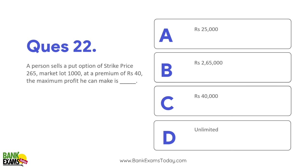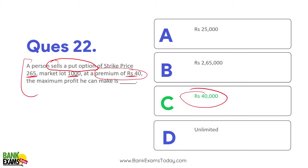Question 24: A person sells a put option with a strike price of ₹65, market lot of 1,000, and a premium of ₹40. How much is the maximum profit he can make? He is an option seller — the maximum he can earn is the full premium: 1,000 × ₹40 = ₹40,000. His maximum loss, however, could be very large if the market moves against him.